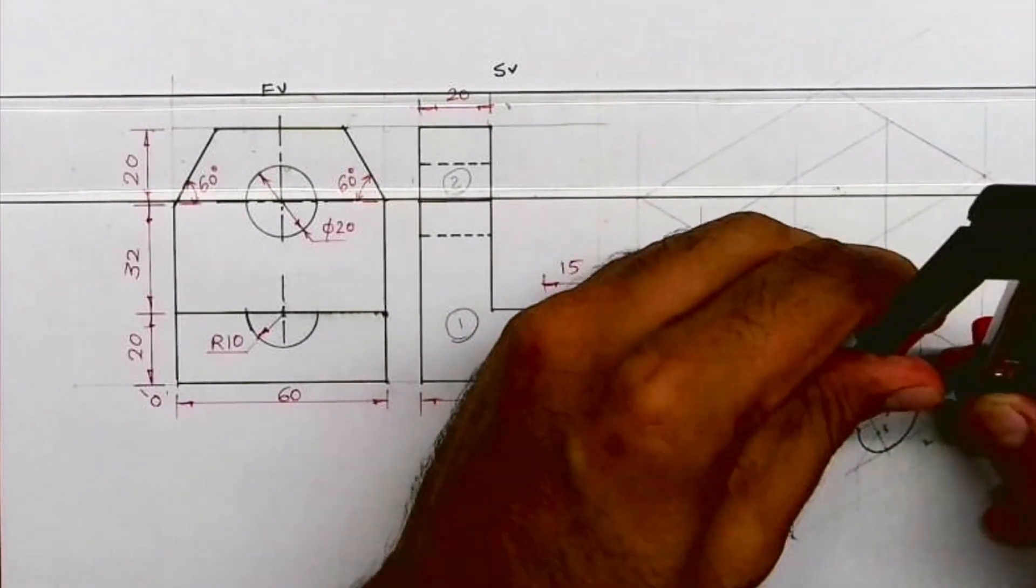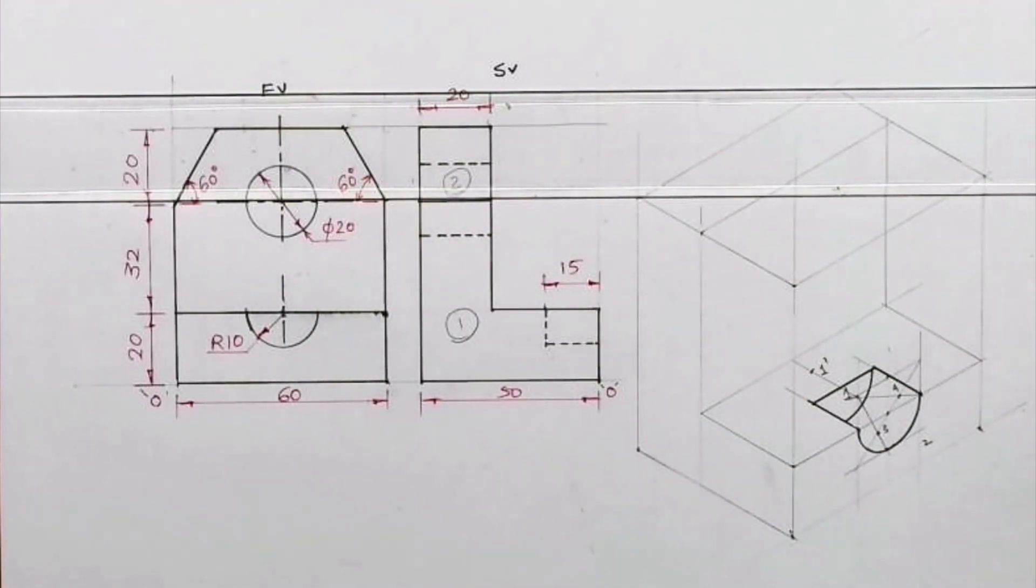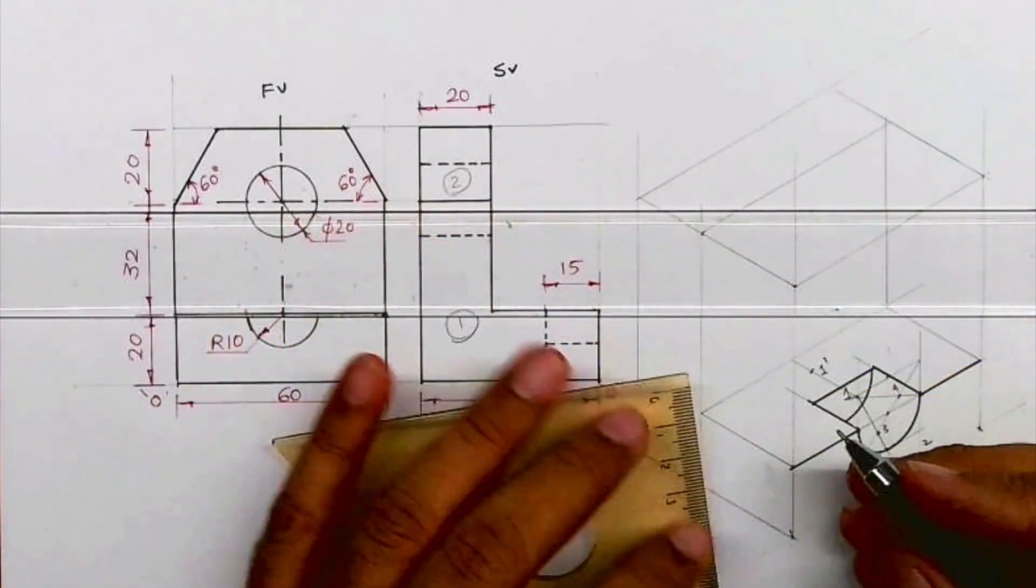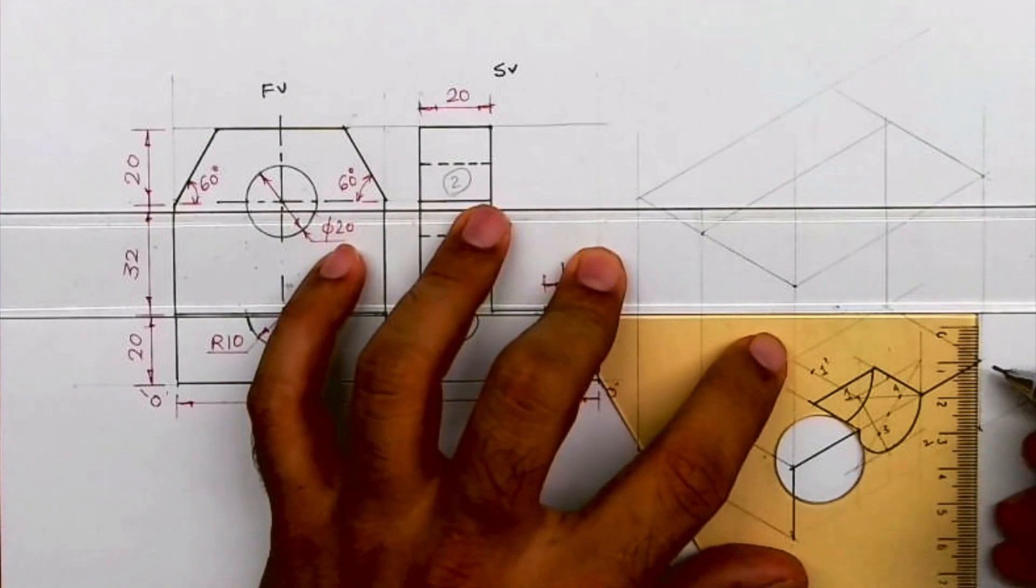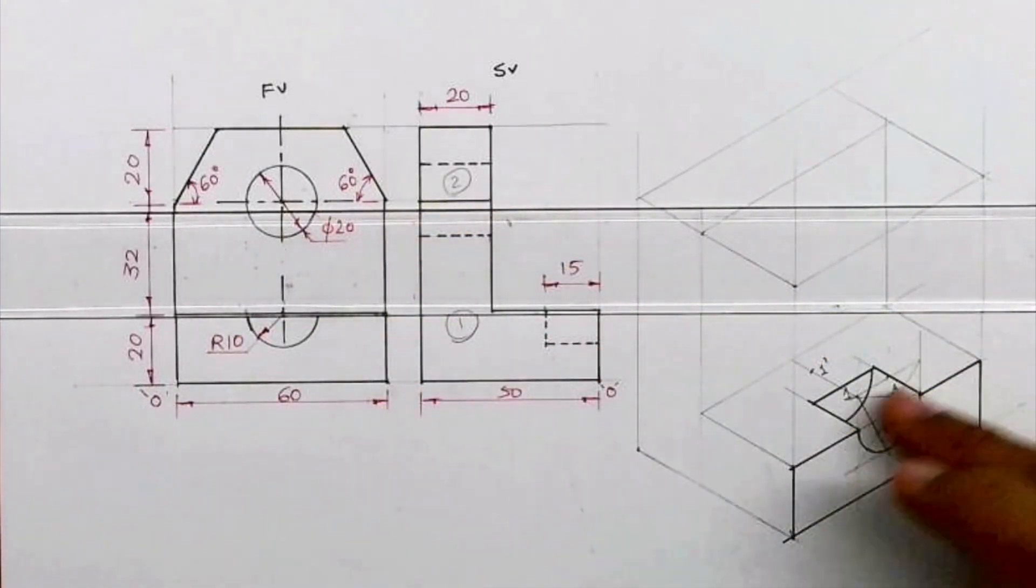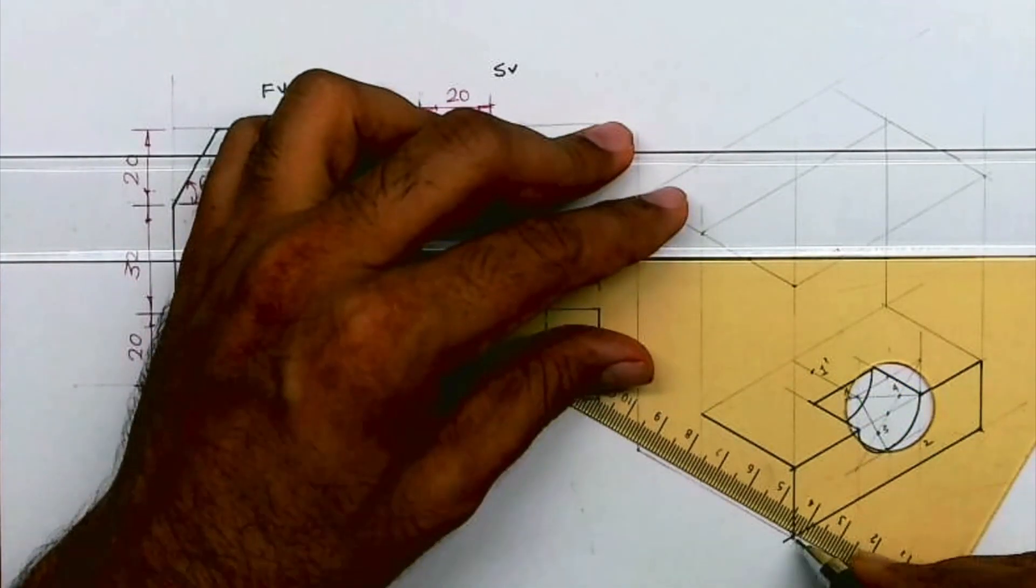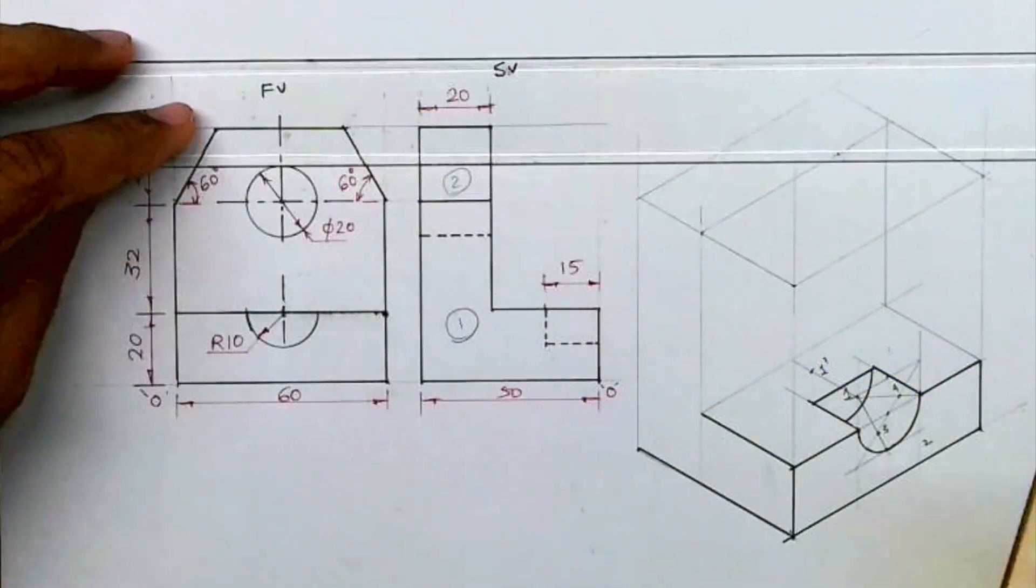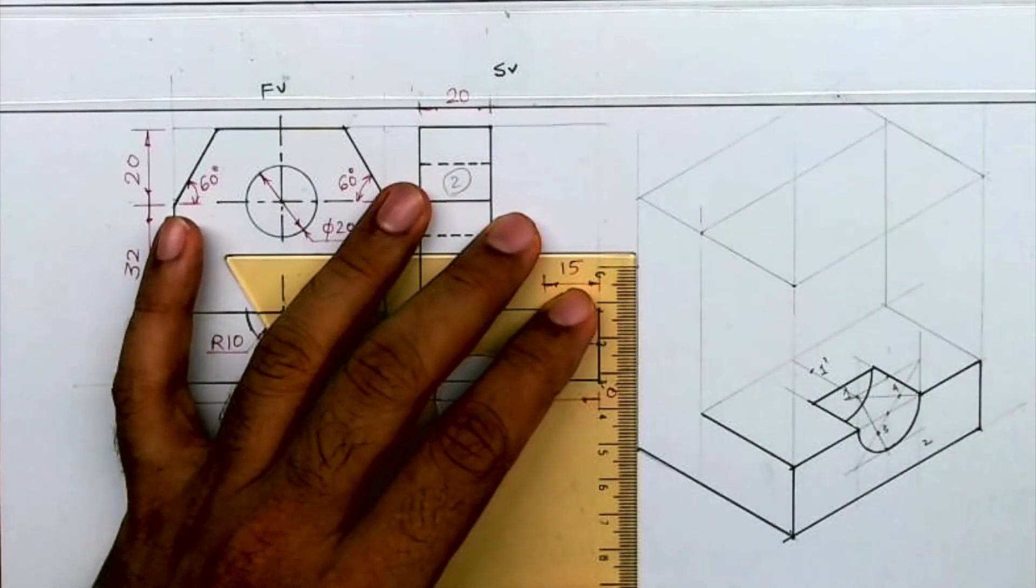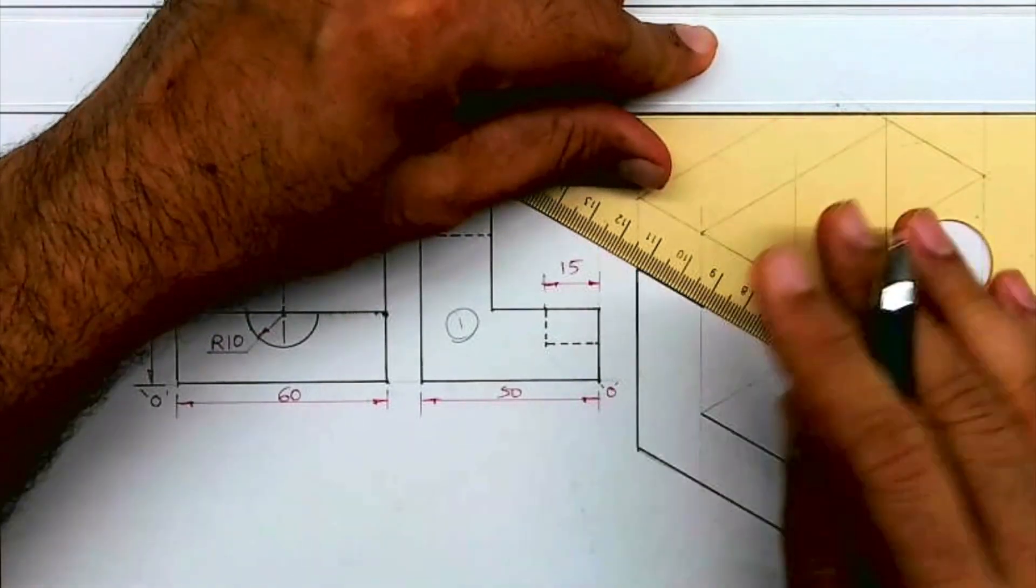So take one, take this radius, you go behind by 15 and you draw arc. This will be dark. This will be dark. This will be dark. You take this behind, you take this behind. Then here you mark 32 plus 20, that is 52. This will be dark.